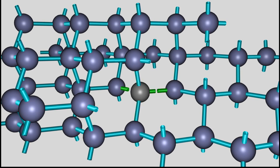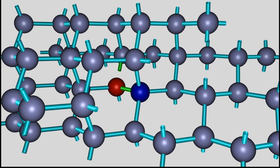To move the hole away from the impurity atom, an electron has to be transferred from a neighboring silicon atom to the impurity atom. During this procedure, a negatively charged ion originating from the impurity atom and a positively charged silicon ion is created.